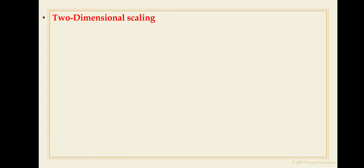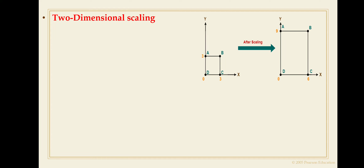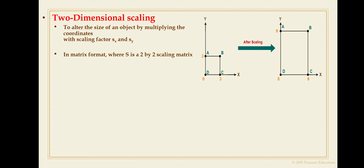In today's lecture we are going to discuss the next type of transformation: scaling, or two-dimensional scaling. Scaling alters the size of a graphic element or object — it is used to enlarge or reduce the size of an element. As shown in the figure, suppose we have a rectangle ABCD; scaling alters the size of that object.